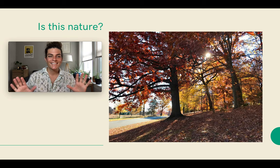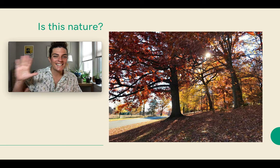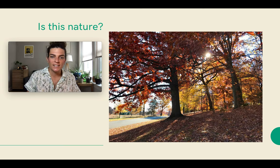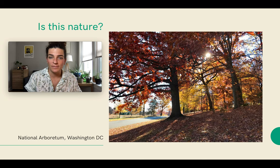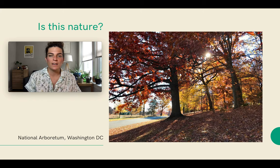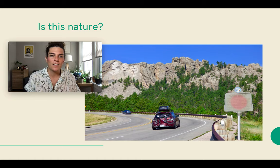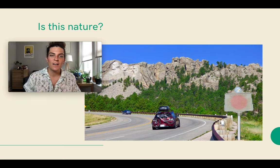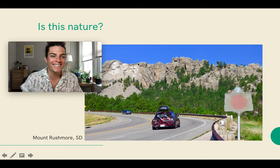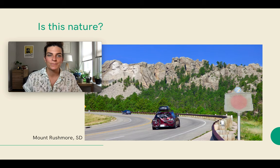Number five — is this nature? Beautiful autumnal scene here. There's an asphalt road here. This is the National Arboretum in Washington, D.C. I took this photo around Thanksgiving one year, and many of these trees are oak trees. Washington, D.C. does sit in an ecoregion dominated by oak forest. So is this nature? Number six — this defaced mountain, this rock face, which appears to have been ruined. Would you say this is nature? This is Mount Rushmore.